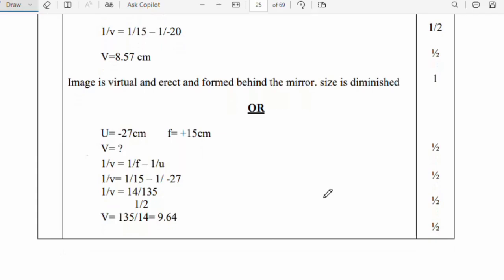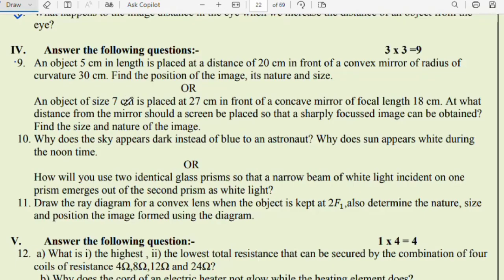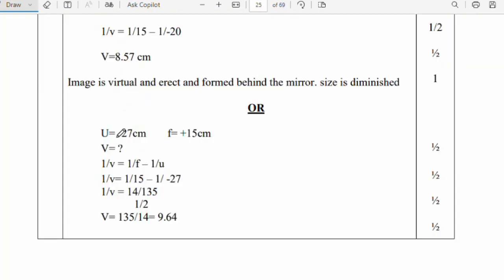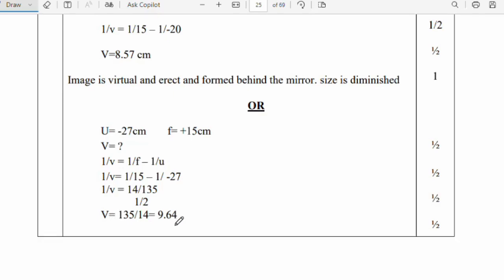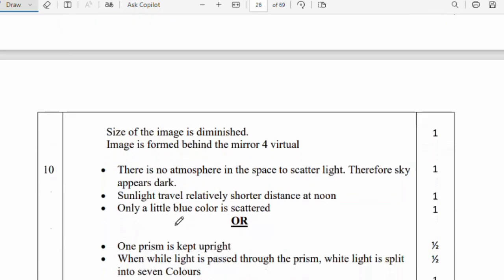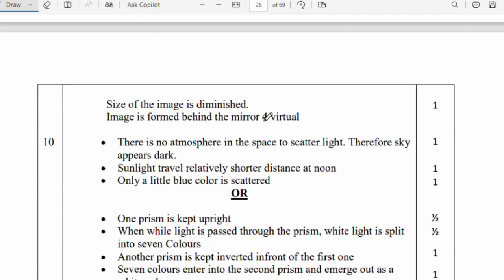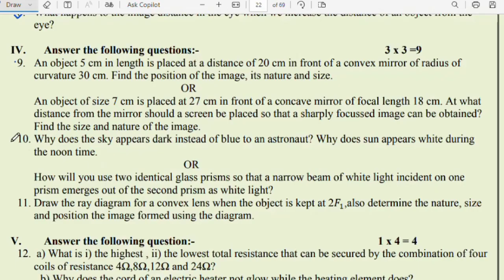Or, an object of size 7 cm is placed at 27 cm in front of a concave mirror of focal length 18 cm. At what distance from the mirror should a screen be placed so that a sharply focused image can be obtained? Find the size and nature of the image. We have u = -27 cm, f = +15 cm. Using 1/v = 1/f - 1/u, substituting we get v = 135/14 = 9.64 cm. The image is diminished and formed behind the mirror. That is virtual.